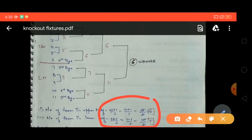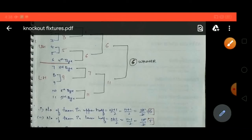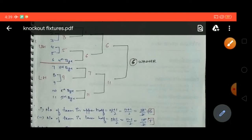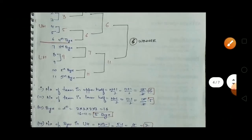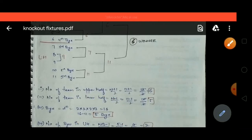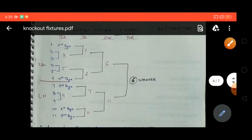So we put 6 teams in the upper half and 5 teams in the lower half. For byes, using 2 to the power of n: 2×2×2×2 = 16, which is greater than 11. Then 16 minus 11 equals 5, so we have 5 byes.